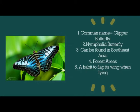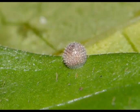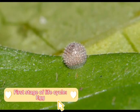This clipper butterfly is a fast-flying butterfly and it has a habit to flap its wings when flying a few degrees below the horizontal position. Oviposition, known as the expulsion of the egg from the oviduct to the external environment, can be divided into two categories: depositing singly or in clusters. Parthenos sylvia lays only one egg at a time.